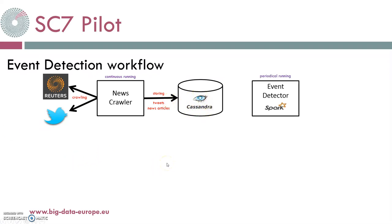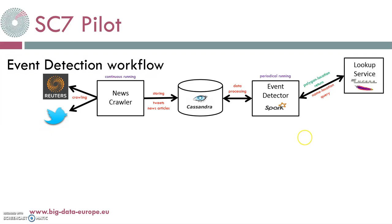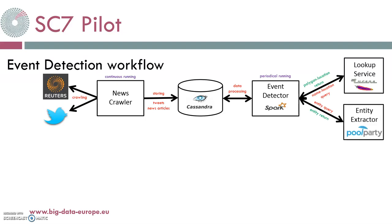While the Event Detector is processing data from Cassandra in order to create an event, it needs to specify the coordinates of locations it finds in the data. So it queries the lookup service and sends location names, and the lookup service sends back polygons with coordinates of each location. Also, in cooperation with the Semantic Web Company, the Event Detector sends queries to Pool Party about the entities, and Pool Party sends back the entities regarding each event. When the events are ready, they are stored through GeoTriples to Strabon as RDF.